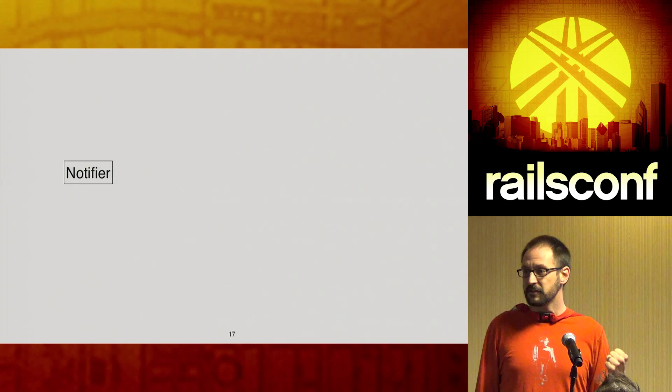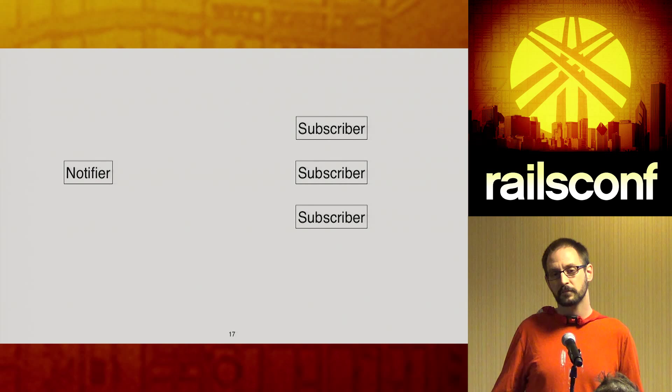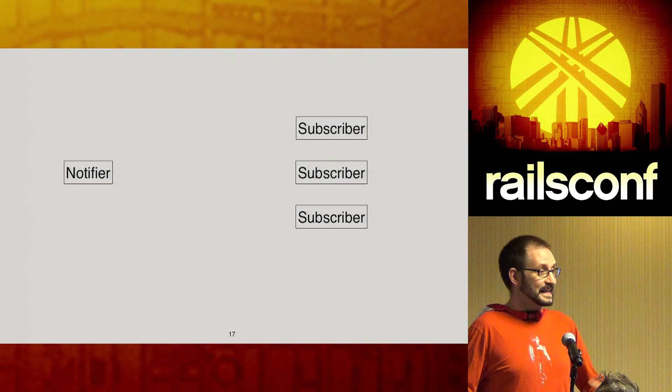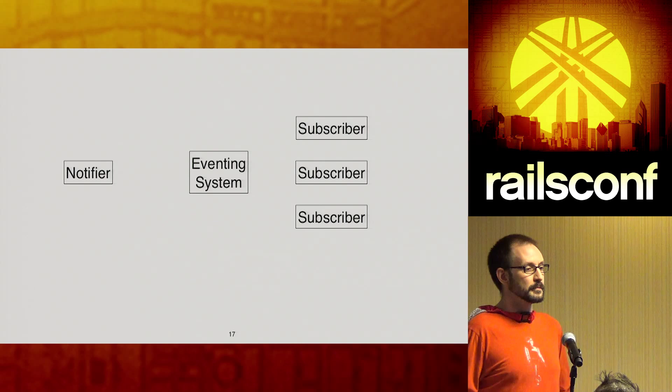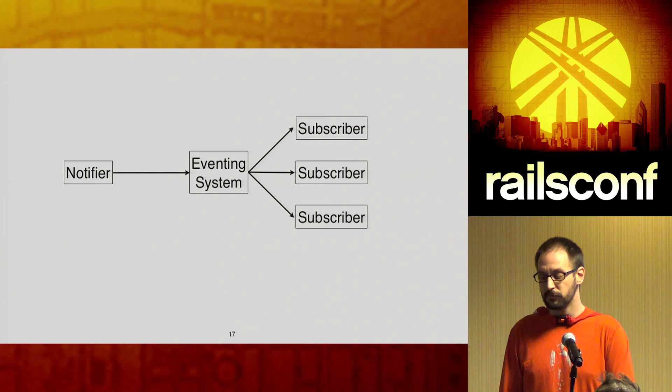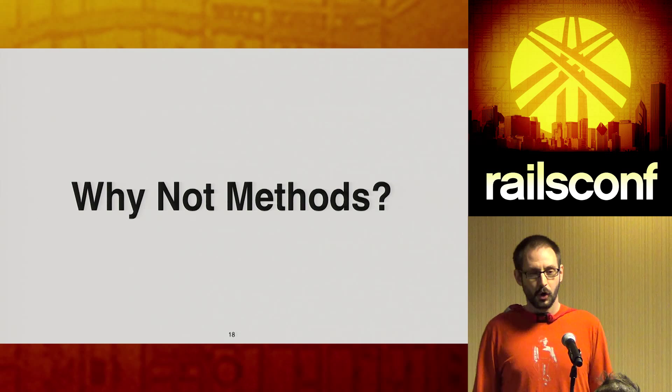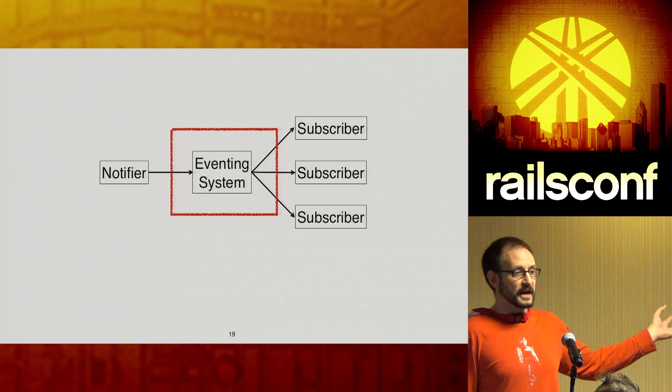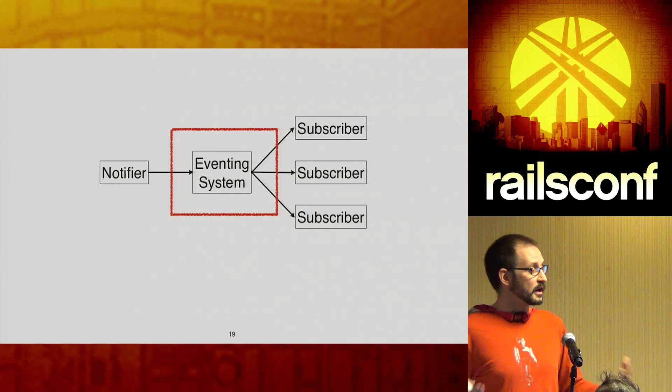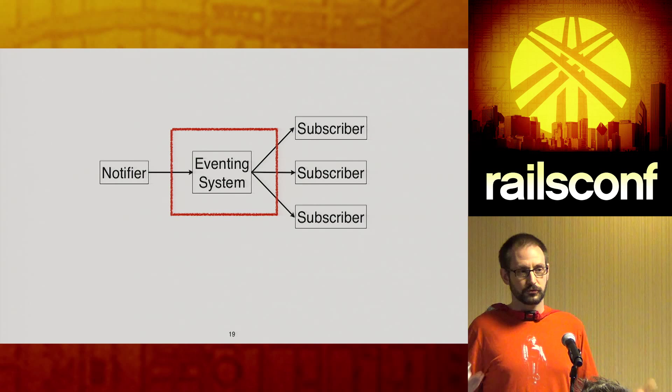The main term I'll use: somebody that knows that something interesting happened in your system, I'll refer to as a notifier. There's a set of subscribers — those are the pieces of your application that care about that event that just happened. And then there's some sort of eventing system in the middle that dispatches those events from the notifier to all of the subscribers. This is really pretty basic, but it's because of that eventing system that we get the decoupling. It allows the notifier and the subscriber to not necessarily know directly about each other.